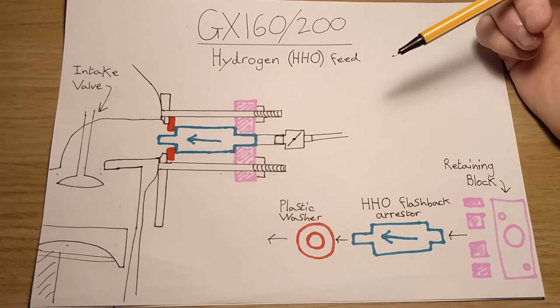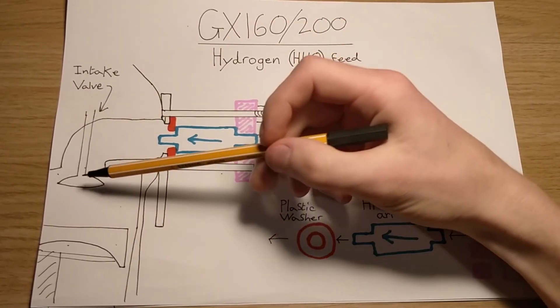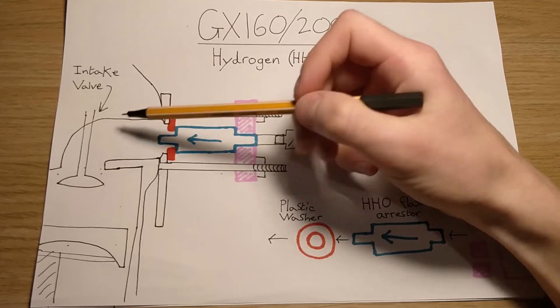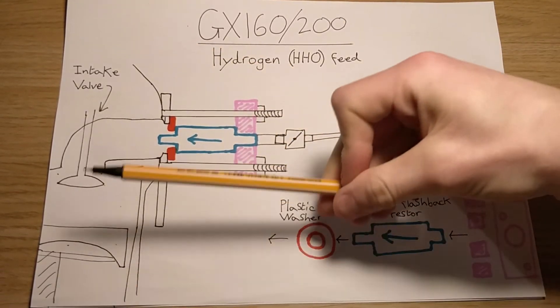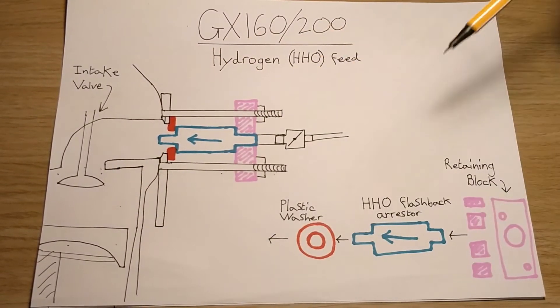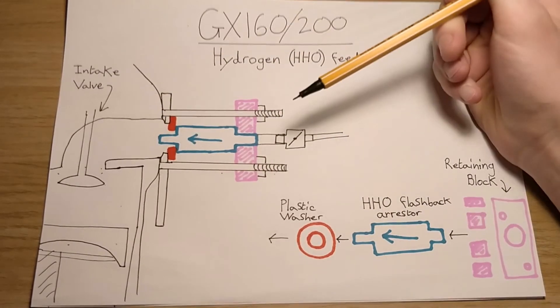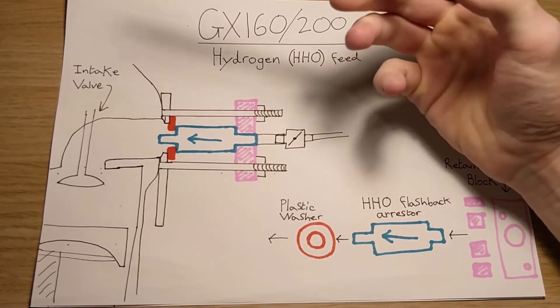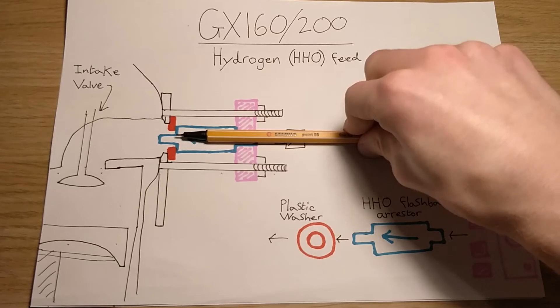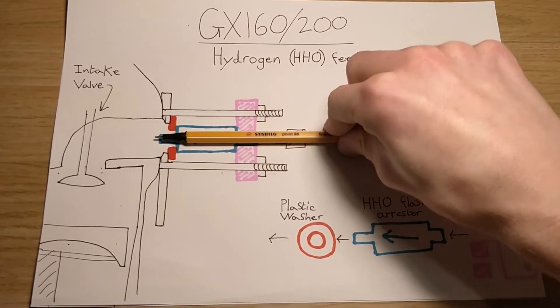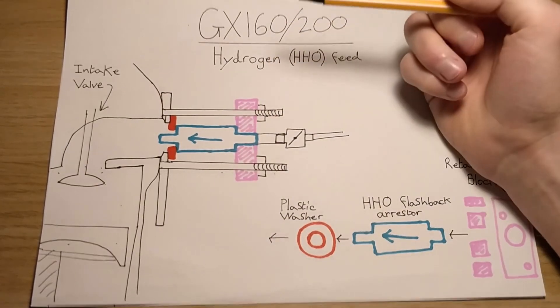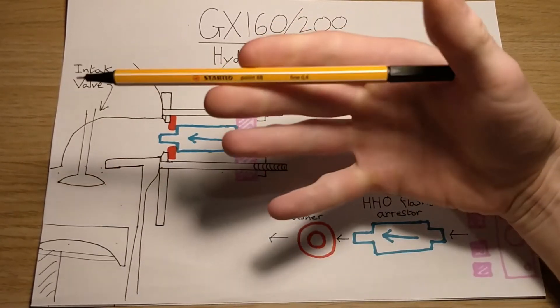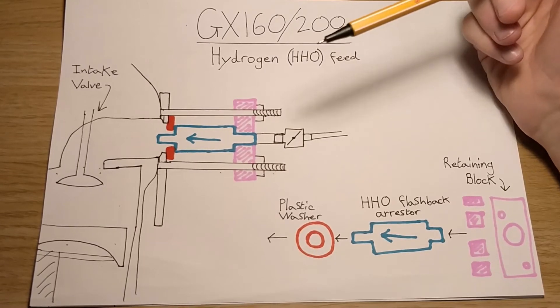If you do that and you have the pipe going in and the flashback arrester somewhere near your bubbler or your generator for the HHO, any backfire is going to travel from here all the way down your pipe to your flashback arrester. Which means on the next engine cycle, there's not going to be any hydrogen there because it's not going to travel in time to get there, which is a problem I found. So by actually having the flashback arrester butted up against the engine, any backfire that happens is instantaneously replaced, which is allowing the engine to cycle still because there's still fuel there for it to burn.